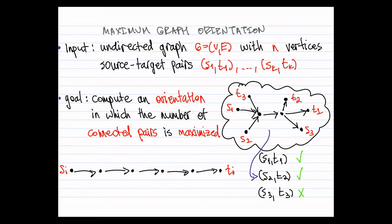So if you look at the toy example that is shown here, then by orienting all edges from left to right, we are able to satisfy the pairs S1 T1 and S2 T2 when not satisfying the third one. And this orientation is also optimal in the sense that no other orientation can satisfy more pairs.